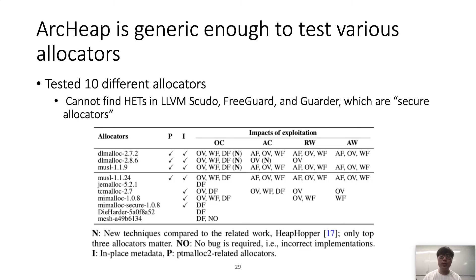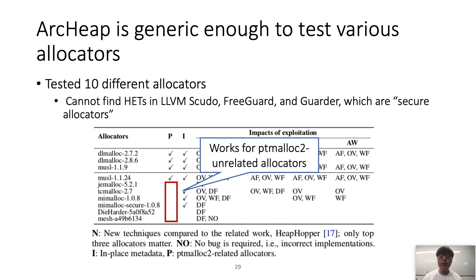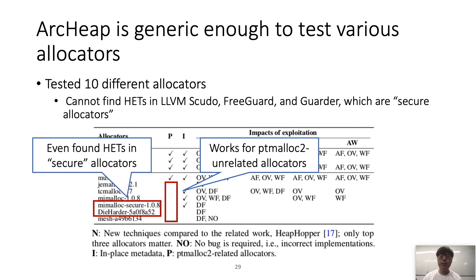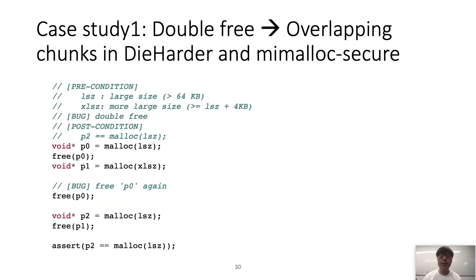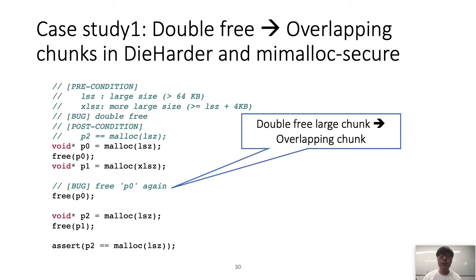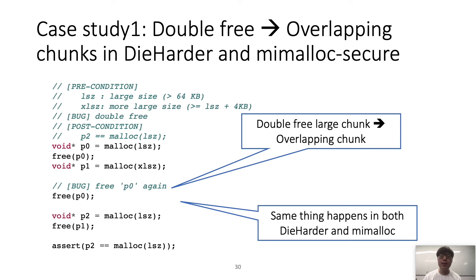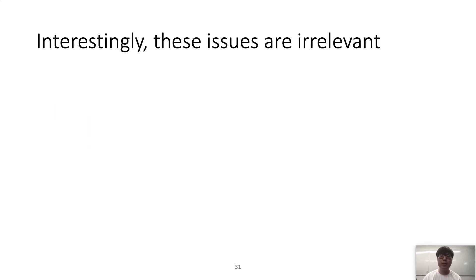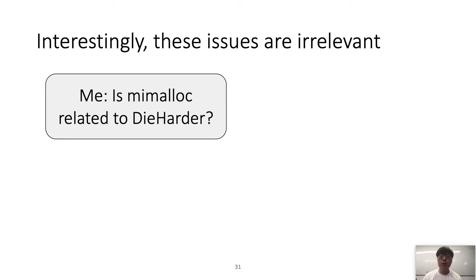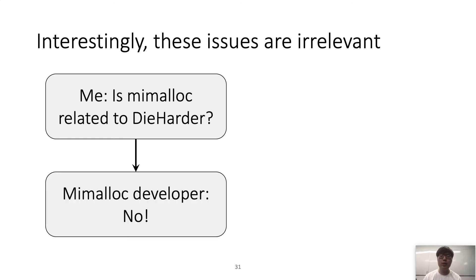Rkip's technique is also generic enough to test various allocators — we tested 10 different allocators. Rkip fails to find heap exploitation techniques in three allocators: LLVM-Scudo, FreeGuard, and Guarder, which are secure allocators. Notably, Rkip successfully discovered heap exploitation techniques in allocators unrelated to ptmalloc2, showing its generality. It can even find techniques in secure allocators such as MIMallocSecure and DieHarder. For example, Rkip found a heap exploitation technique converting double free to overlapping chunk in both DieHarder and MIMallocSecure: double freeing a very large chunk results in an overlapping chunk. Interestingly, these issues are independent — DieHarder missed the check and MIMalloc's check was wrong. Our auto-generated POC has been integrated into MIMalloc's regression test.